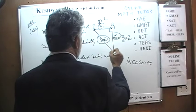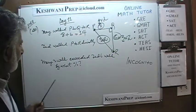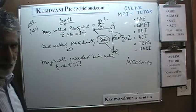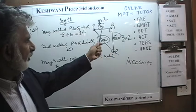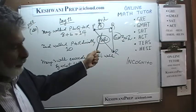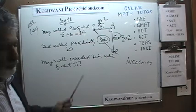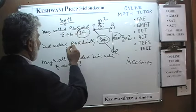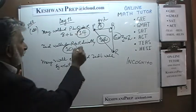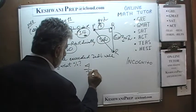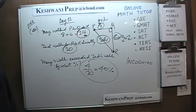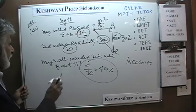So the hypotenuse PR is 5 times 2, which is 10. You can verify with Pythagorean theorem: 36 plus 64 is 100, and the square root of 100 is 10. Mary walked 14 miles, Ted walked 10 miles. 14 is 4 more than 10, and 4 is simply 40% of 10. Mary walked 40% more distance than Ted.